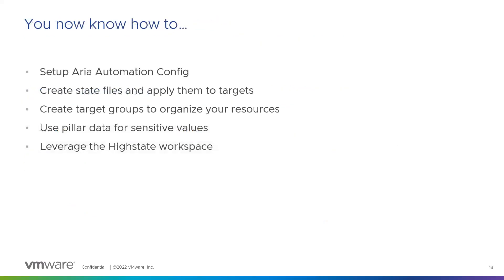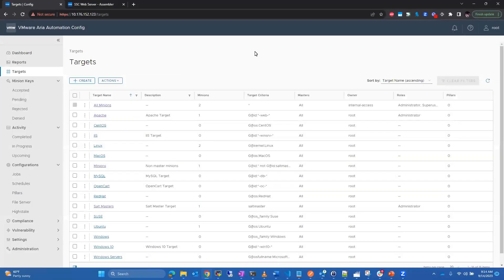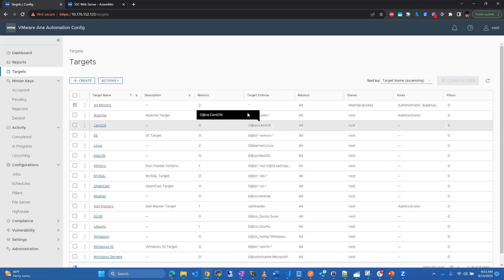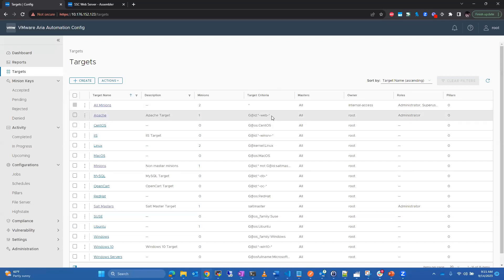That's a brief overview of setting up Config: applying state files to target groups, using pillar data, and leveraging the high state workspace. Let me show you the general layout I like to set up. Here I'm beginning to set up my targets, grouping with grain criteria. From an Aria Automation deployment, I have a custom naming profile where my web servers are named 'web' for Apache.